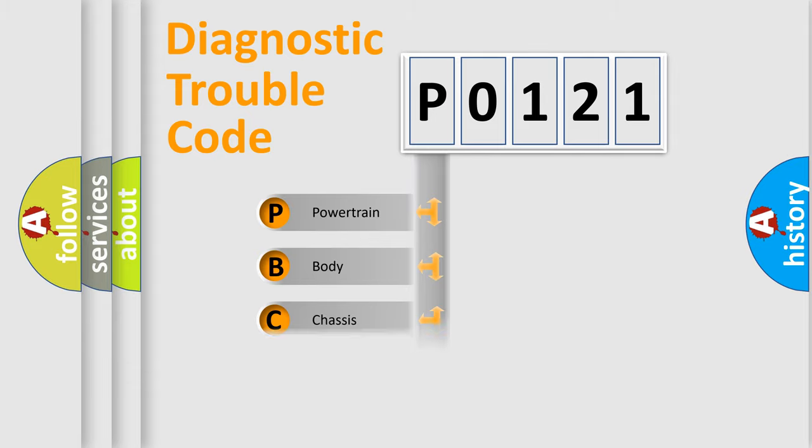Powertrain, Body, Chassis, Network. This distribution is defined in the first character code.